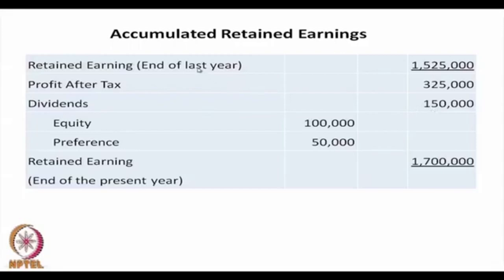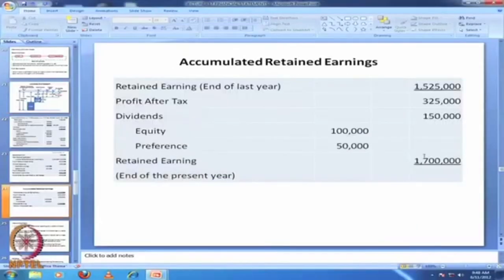From last year's financial statements, the retained earning was 1,525,000 rupees. To this we add this year's earnings of 175,000 rupees, giving 1,700,000 rupees as the retained earning at the end of the present year. This is called the accumulated retained earning statement.